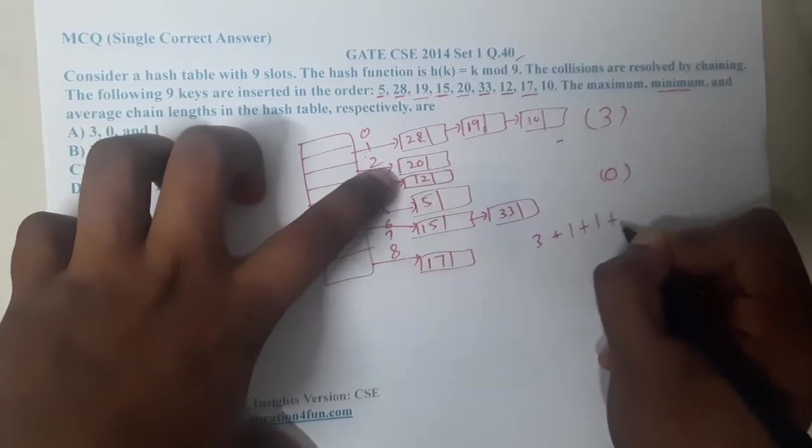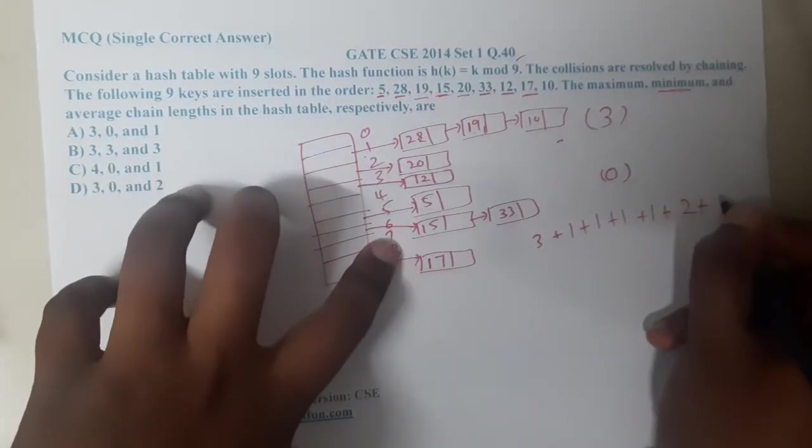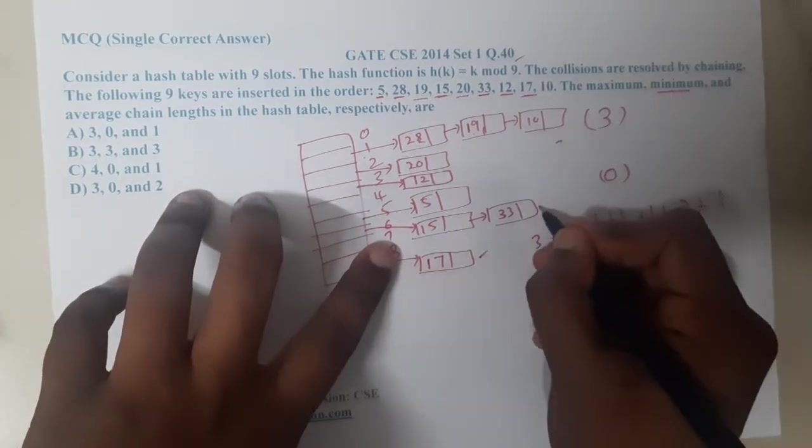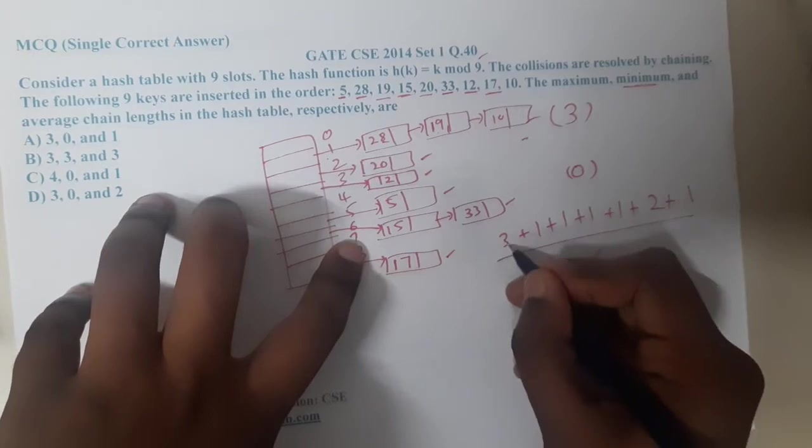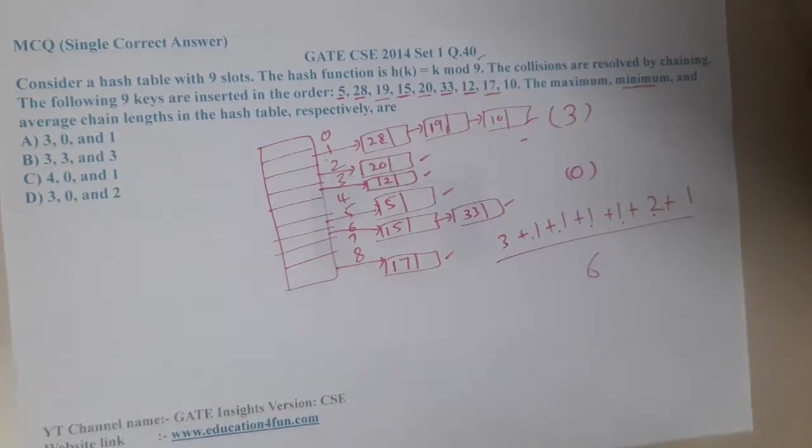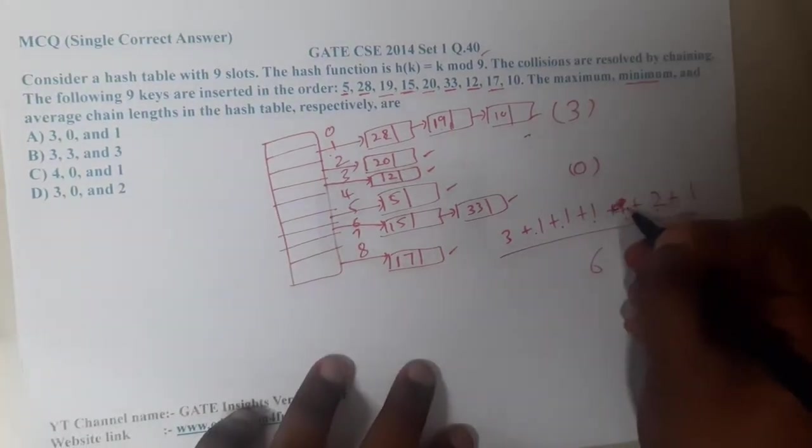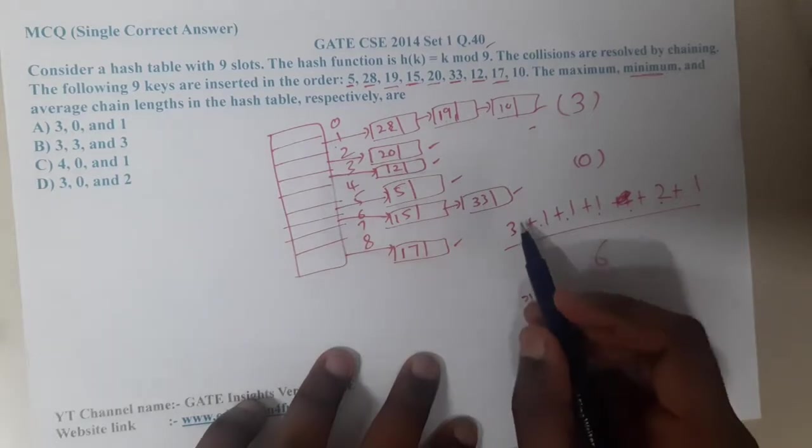Now the question is, what will be the average? Here at 1 node it is 3, plus here it is 1, here it is 1, here it is 1, here it is 2, here it is 1. So how many in total? 1, 2, 3, 4, 5, and 6. So by 6.